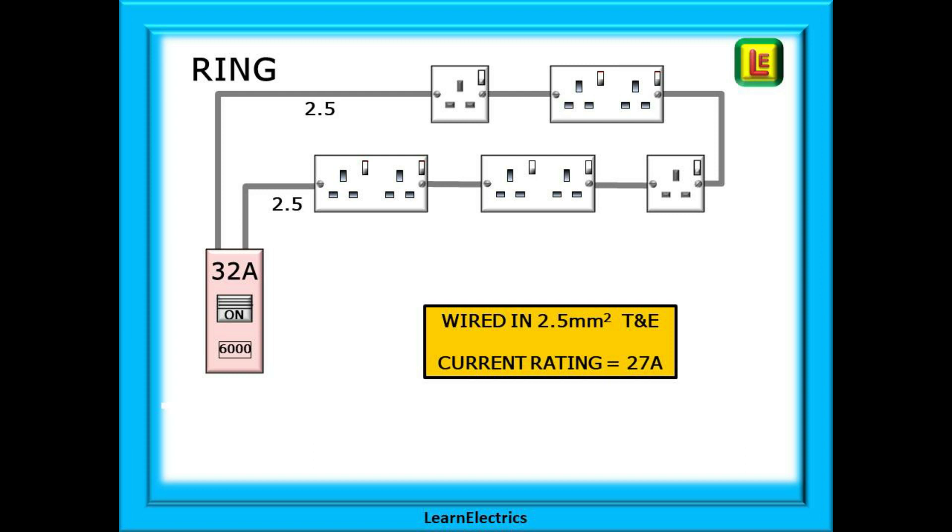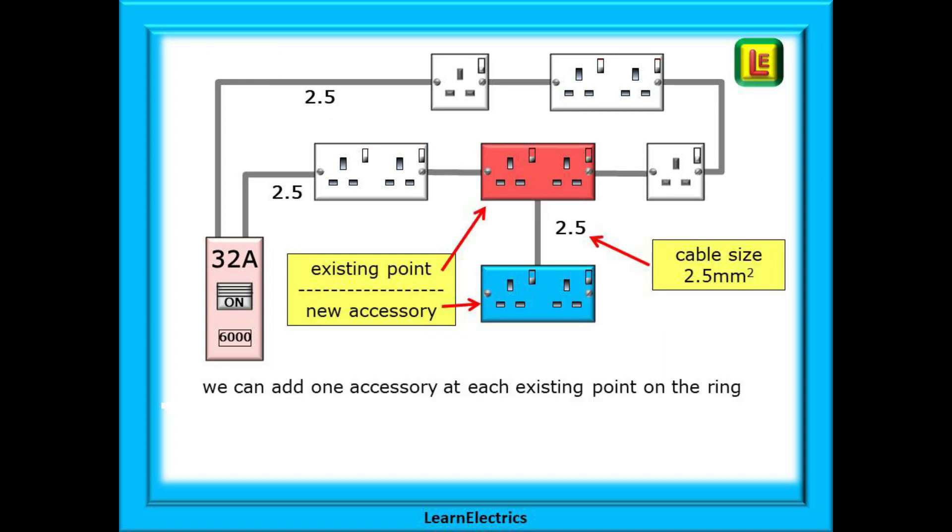This picture shows the sockets or points on the ring. In all the drawings that follow the white sockets are the existing sockets. The red sockets are existing sockets that are being attached to and the blue sockets are the new or additional accessories. The regulations allow us to add one accessory to each accessory on the ring. So in our case we can add one socket to every socket that is on the ring. We can add a double socket or a single socket. It does not matter but it must be only one piece of plastic, one molding. We cannot add two single sockets and say that that is the same as a double socket. It doesn't work like that. One double socket is one accessory. Two single sockets are two accessories.